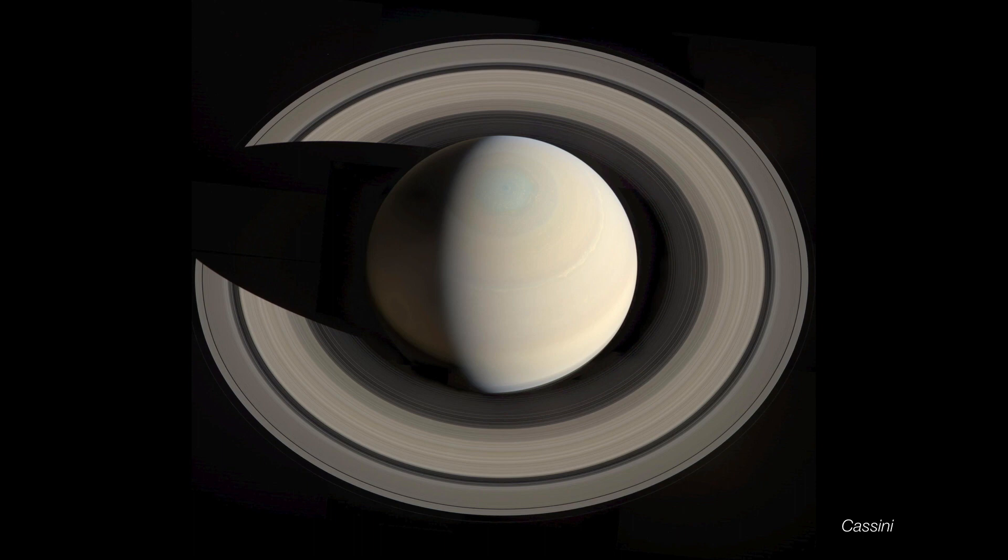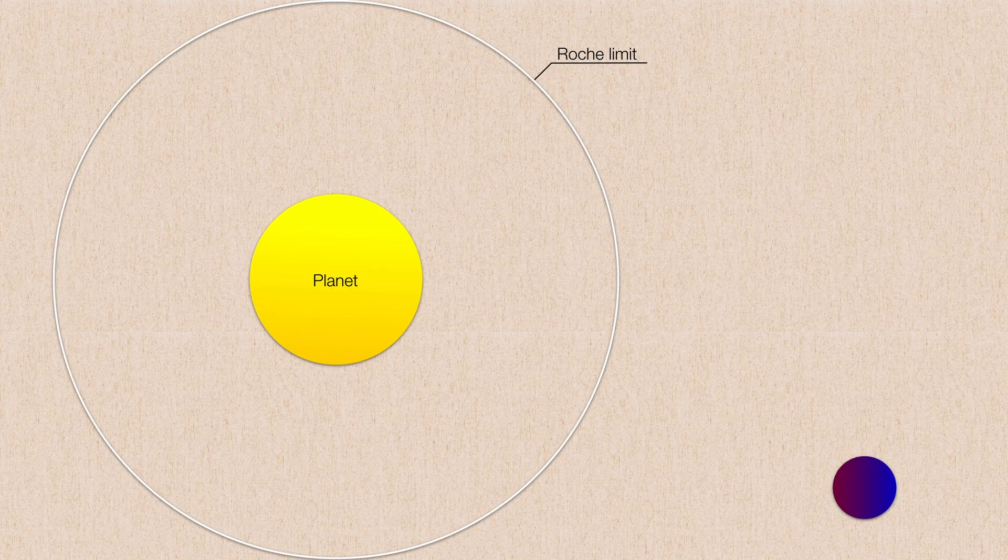So the rings themselves raised several questions, not the least of which were, how did these rings come to be? In other words, where do they come from? And why are the rings still here? Well, the first question is addressed by a kind of a tidal danger zone for large moons. This zone is called the Roche Limit, and it works like this.